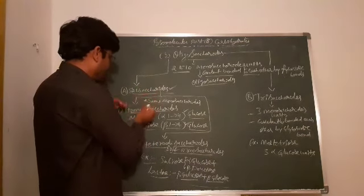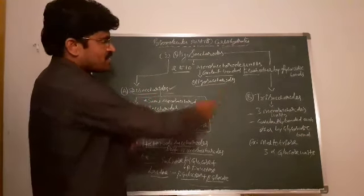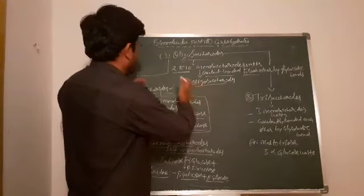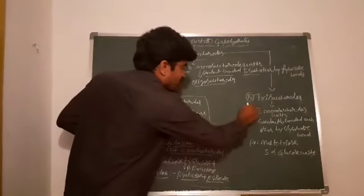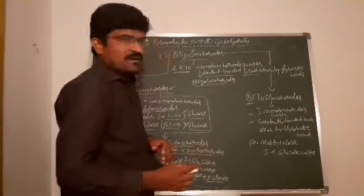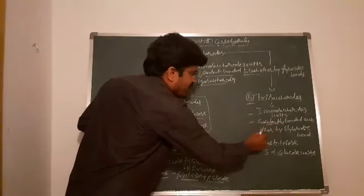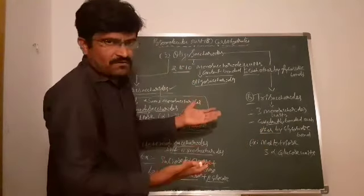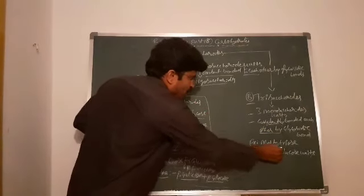So in the case of the second category, in the oligosaccharides, the B-1 is trisaccharides. 3. So 3 monosaccharides units are covalently bounded by each other with glycosidic bond. Best example, melezitose.